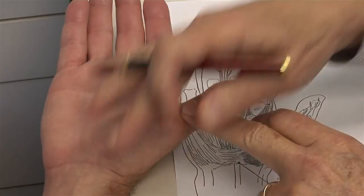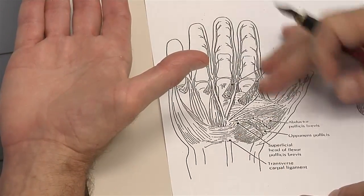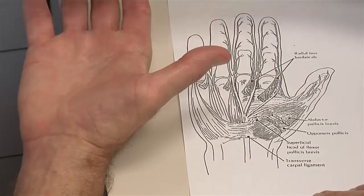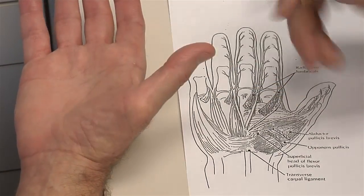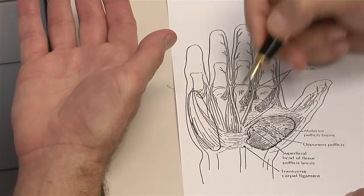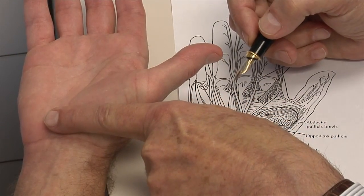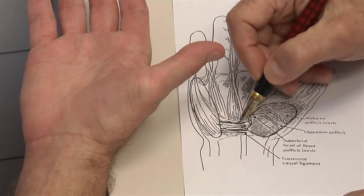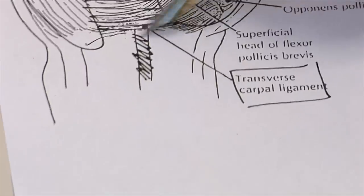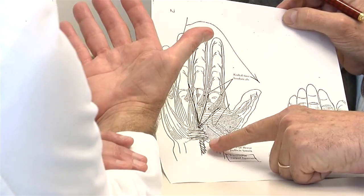This is a right hand from the palmar aspect. This is a drawing of a right hand from the palmar aspect, and we simply remove the skin to show the structures beneath. These two bundles are muscles — this controls the little finger, and this controls the thumb. Across the two goes a membrane, like my finger going across the hand here. That membrane is called the transverse carpal ligament. Beneath the membrane runs this rod — the median nerve.